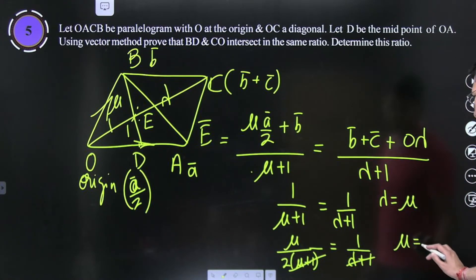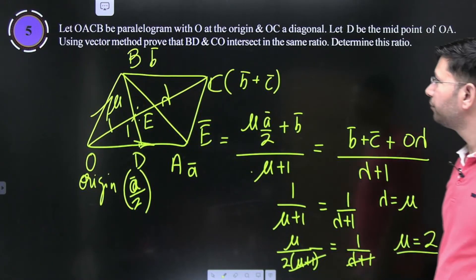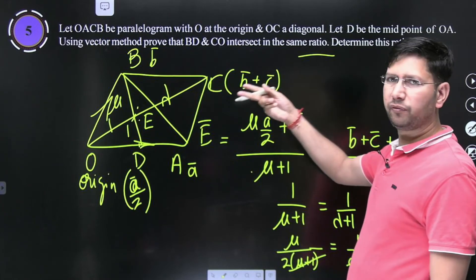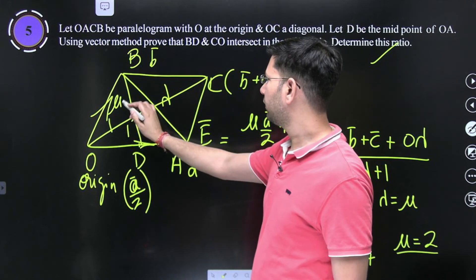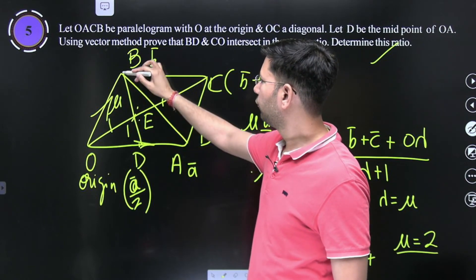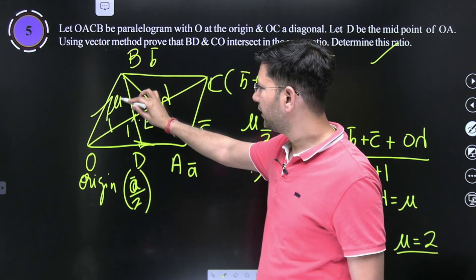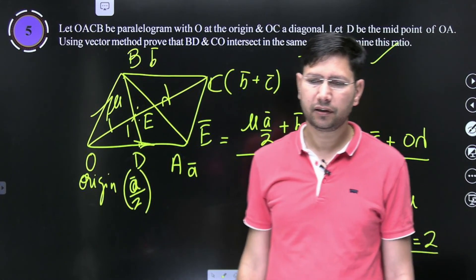Mu equals mu which is mu to mu in the same ratio. We prove the lambda and mu are equal, the ratio. This is your answer. Okay, bye.